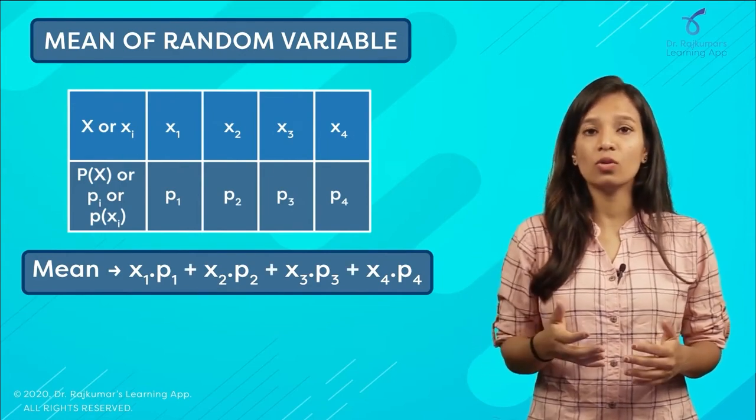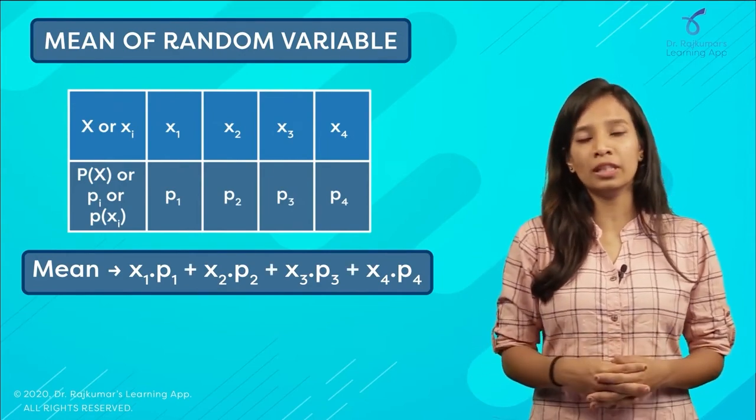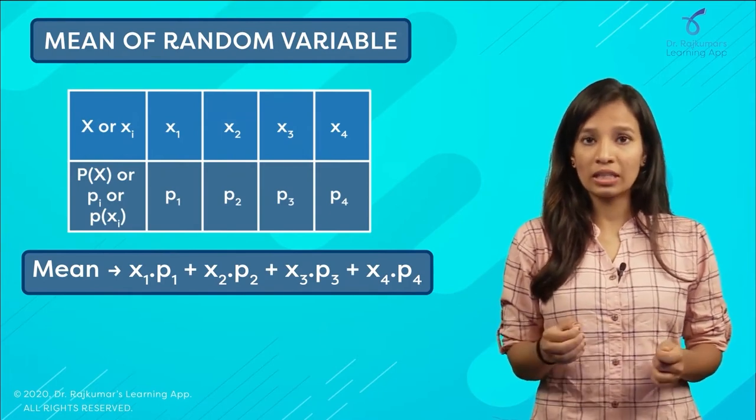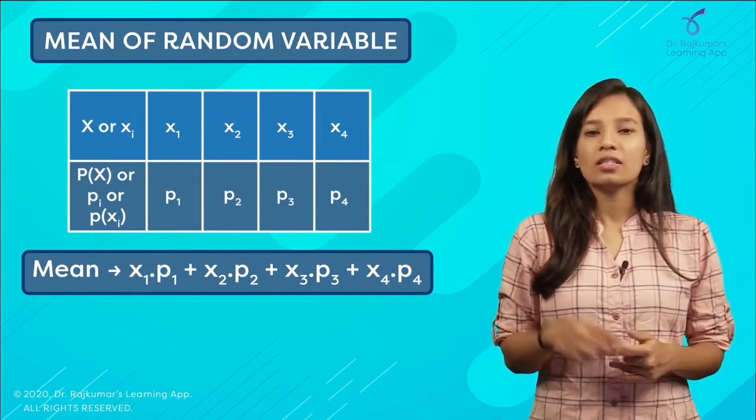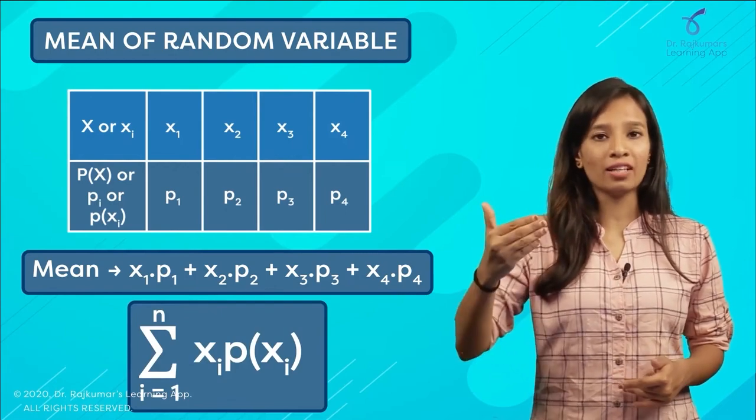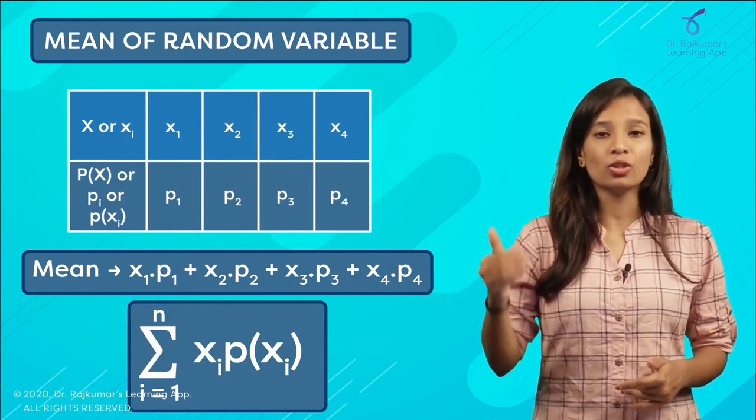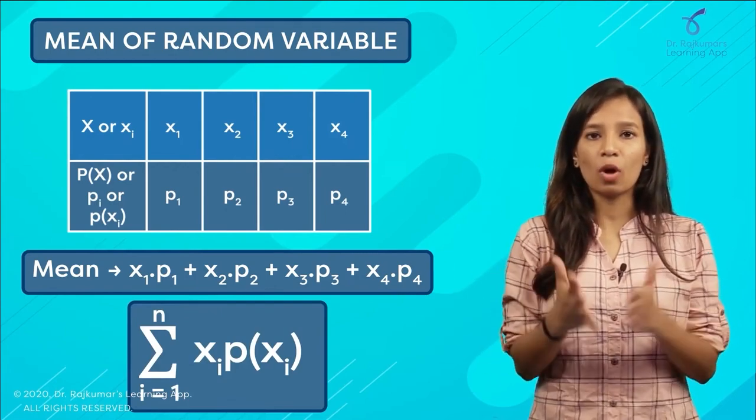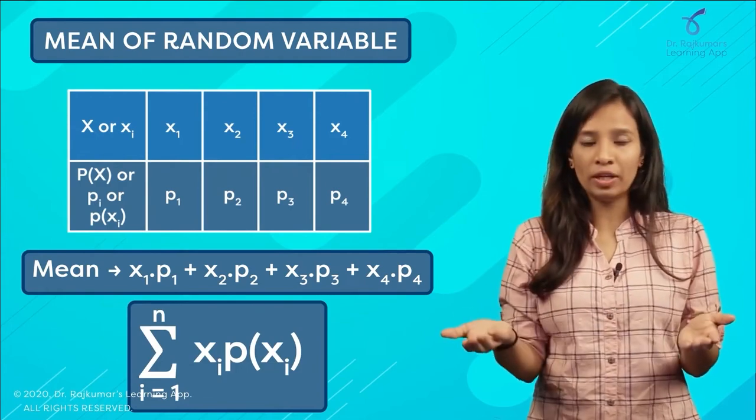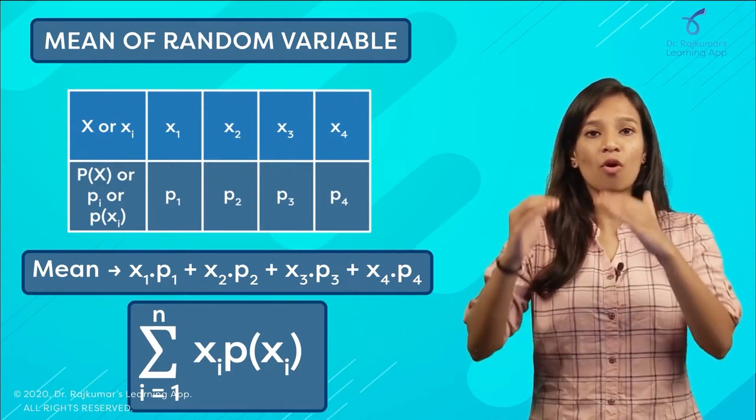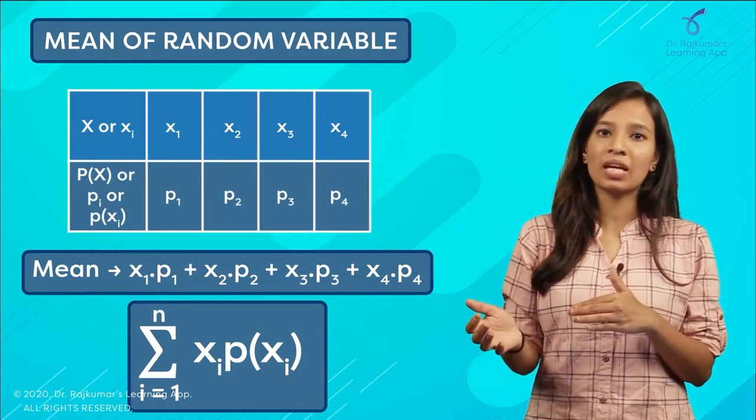The formula is summation from i equals 1 to n of x_i times P(x_i). The product of x with your probability of x, and the summation of all your x and P(x) in your distribution, will give you the mean of the random variable.